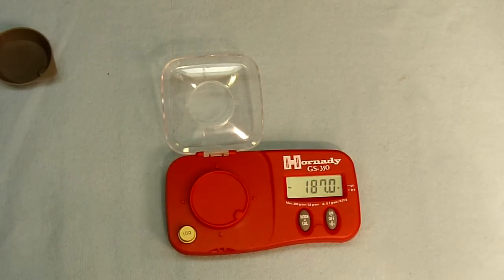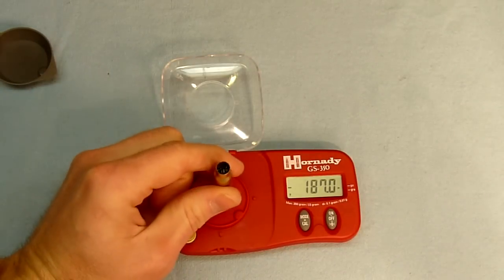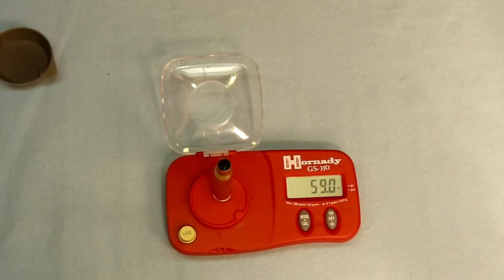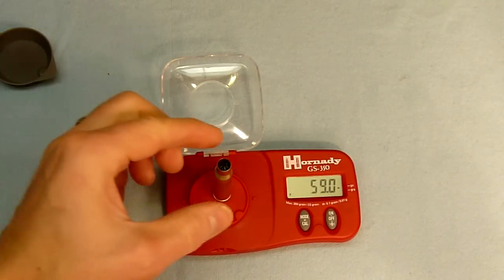Now we're going to dispense a powder load into the case, and then we can put it back on the scale and see how many grains we've got. In this case, we've got 59 grains.